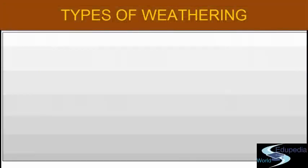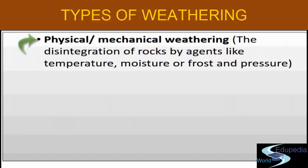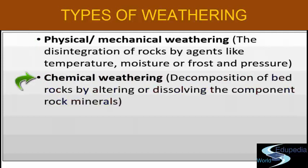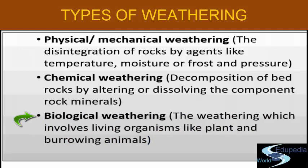The types of weathering can happen in three different ways. First, physical weathering — this is the disintegration of rocks by agents like temperature, moisture, frost, and pressure. Second, chemical weathering — the decomposition of bedrock by altering or dissolving the component rock minerals. Third, biological weathering — where living organisms like plants and burrowing animals are involved. Often, biological weathering is put under the category of physical weathering.